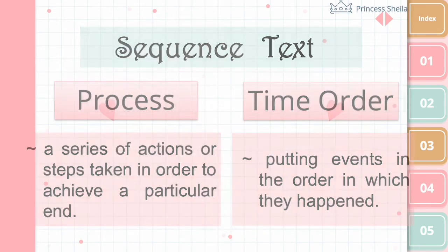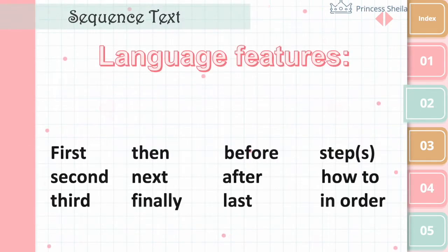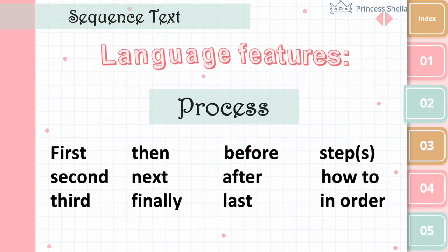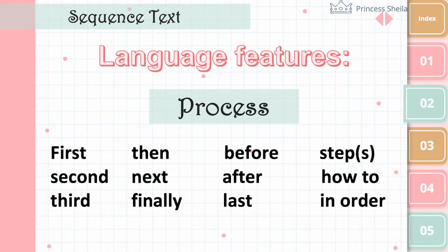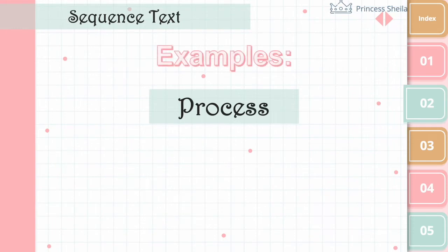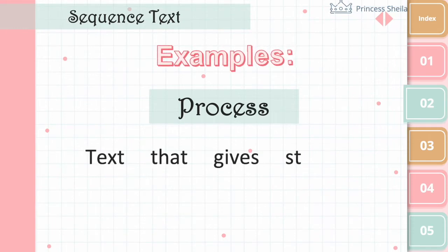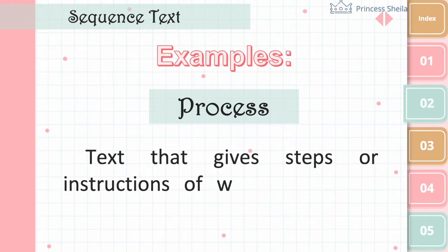These are the language features, or signal words of sequence text presenting a process. A process text gives steps or instructions of what to do, like how-to or procedural books.